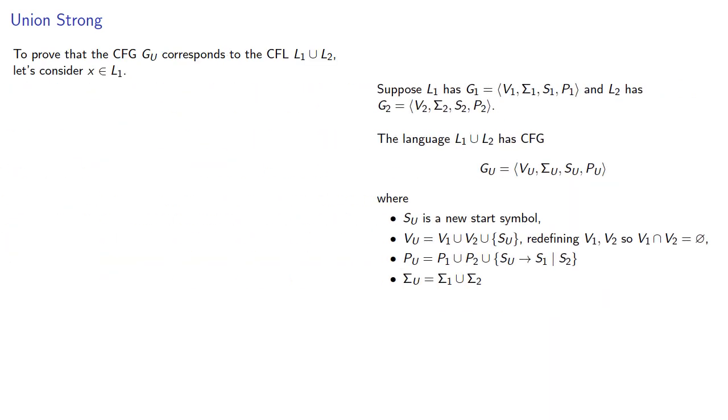To prove that the context-free grammar we've just described corresponds to the context-free language that is the union of the two, let's consider some string in one of the languages. Since it's in L1, we know that we can go from the start symbol of L1 to X, where we'll use this notation to indicate that the rules we're applying are the production rules for P1.